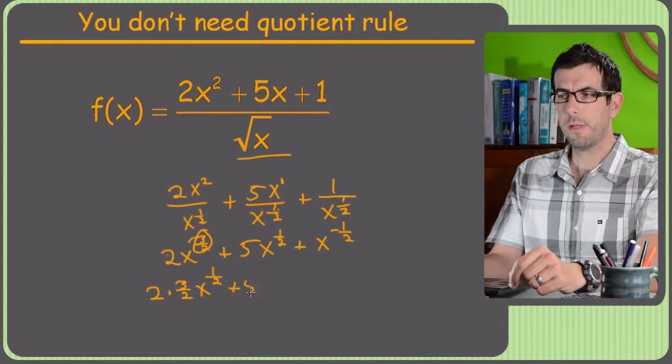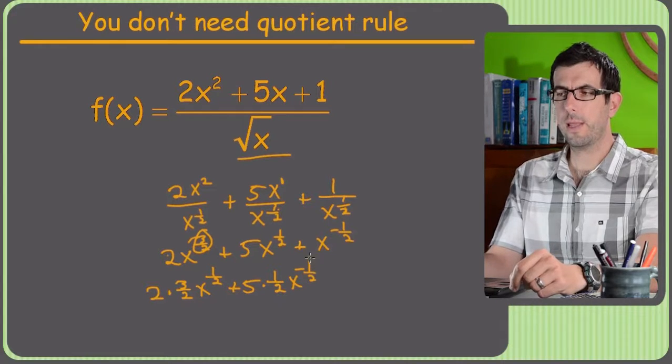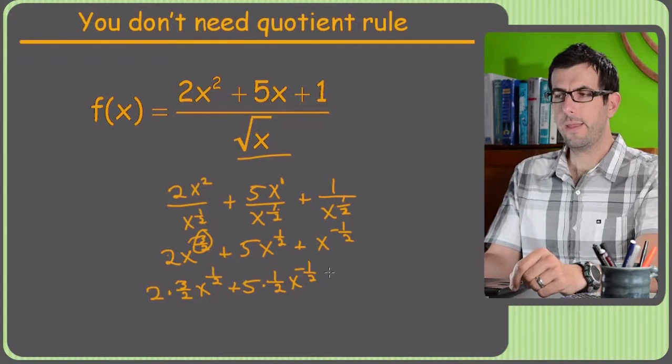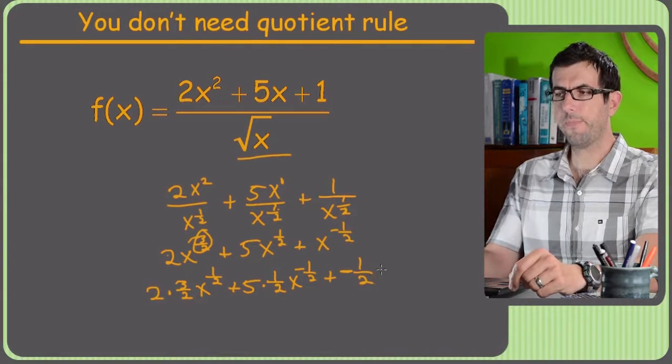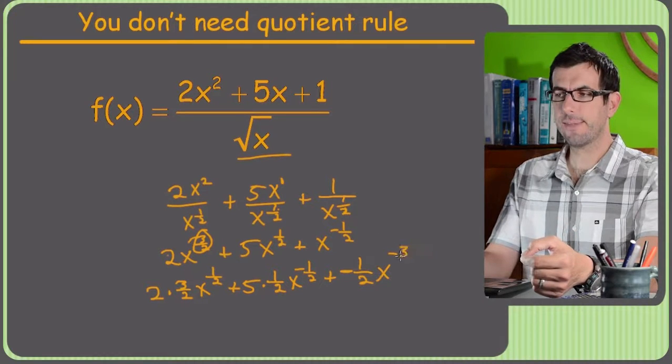Plus 5 times old power to the new power, plus 1 less, and then plus old power down front, oops, negative 1 half, x, and then negative 1 half minus 1, negative 3 halves.